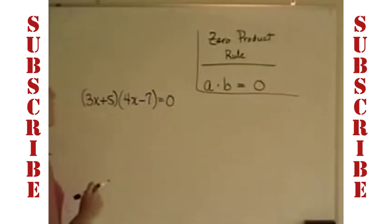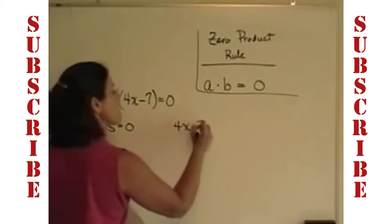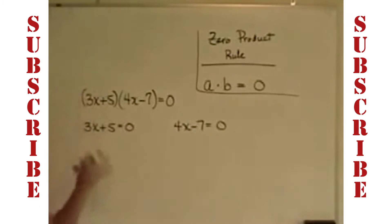Applying the zero product rule to this problem, already in factored form and set equal to zero, just means letting 3x plus 5 equals zero, and letting 4x minus 7 equals zero, and taking these two linear equations and solving them for x.